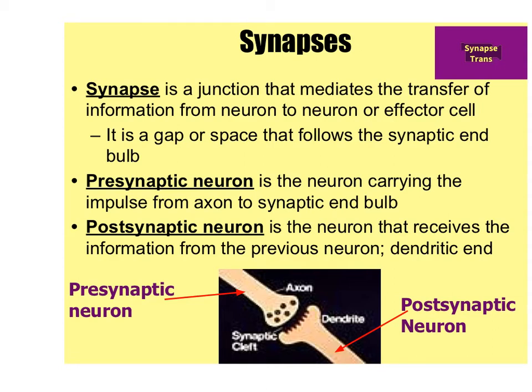Hello everybody and welcome back as we continue our journey through the world of nervous tissue. Last time we were going over the action potential again — that's where one neuron is stimulated to threshold and its polarity goes from negative 70 up to positive 30 and then back to negative 70 again.